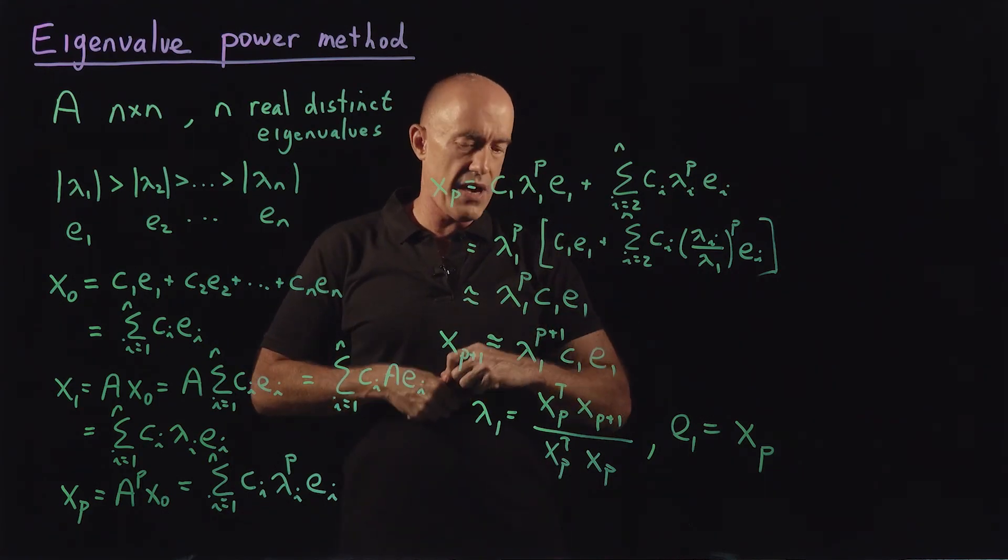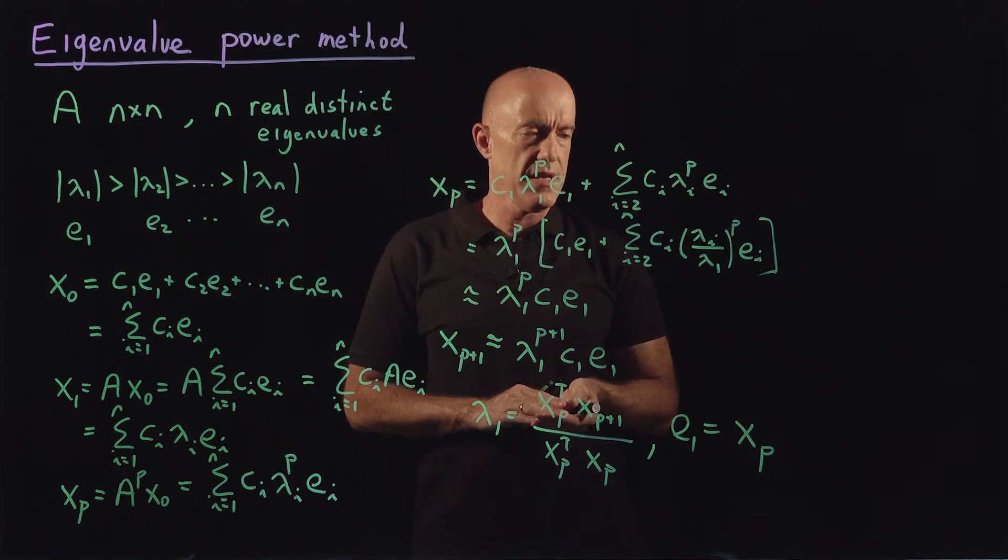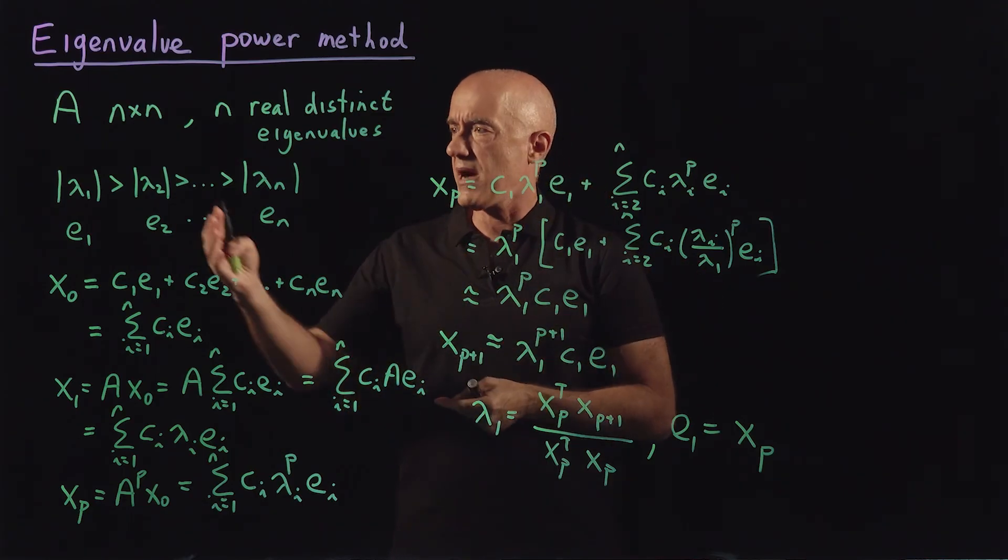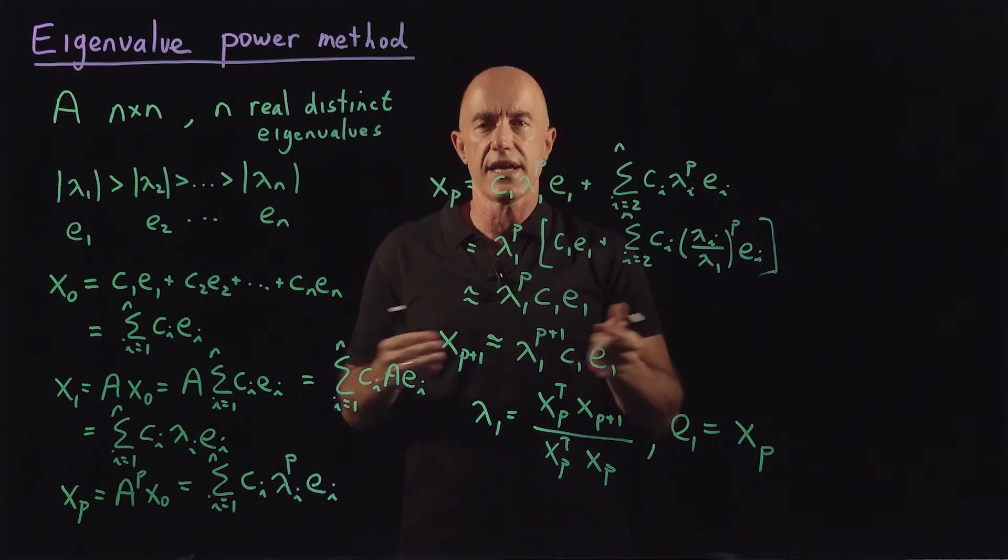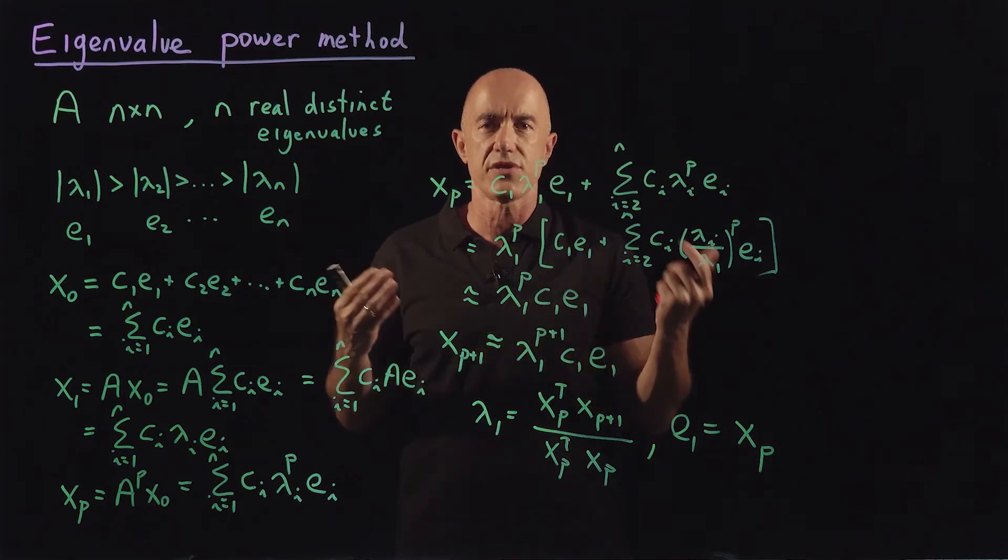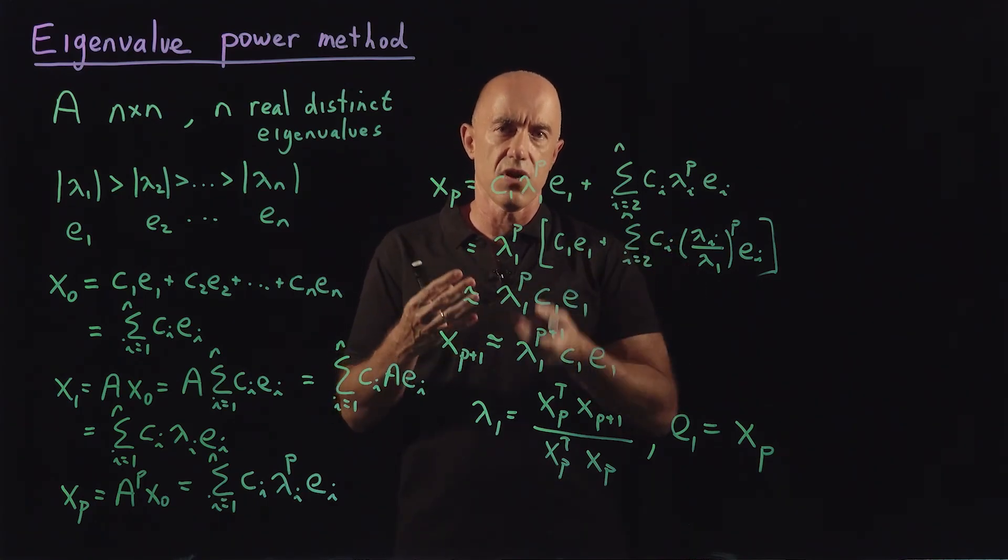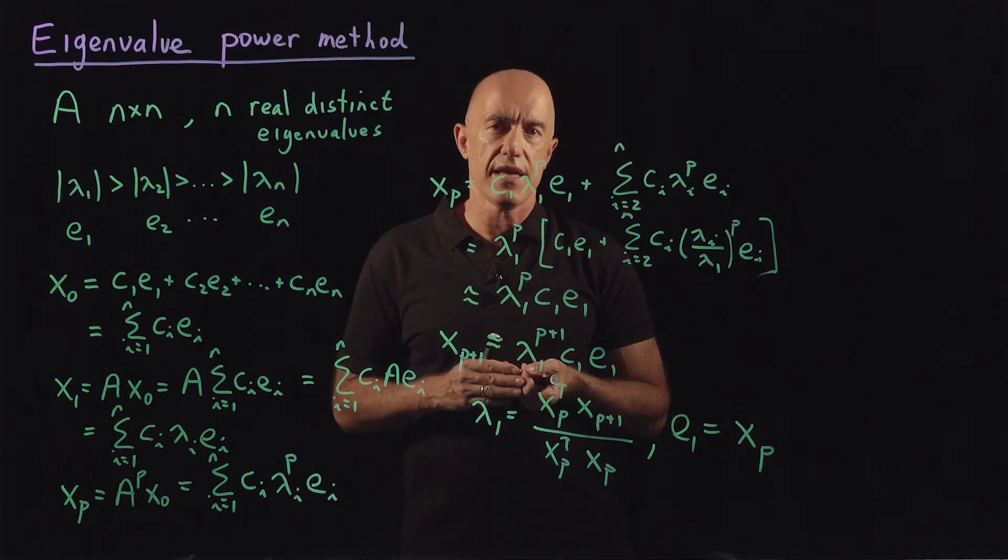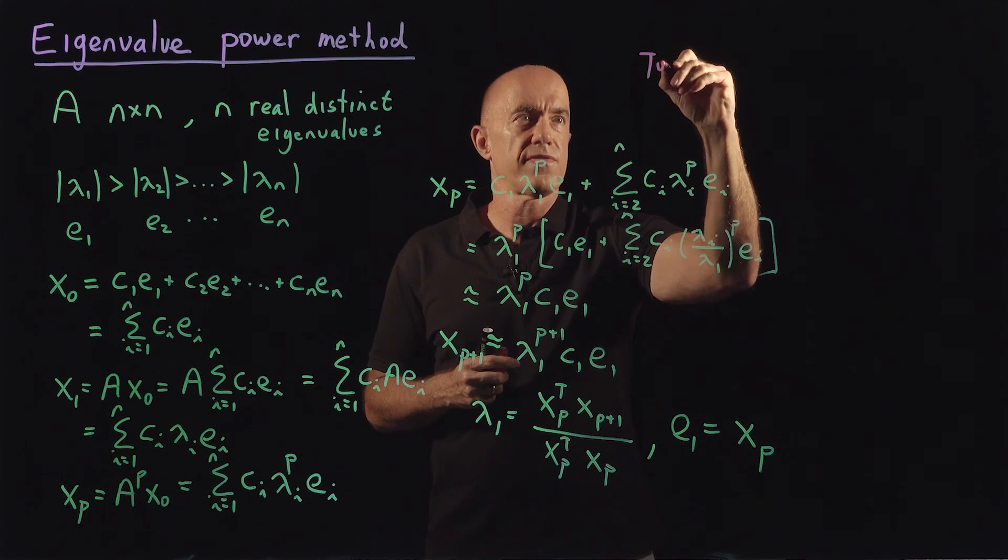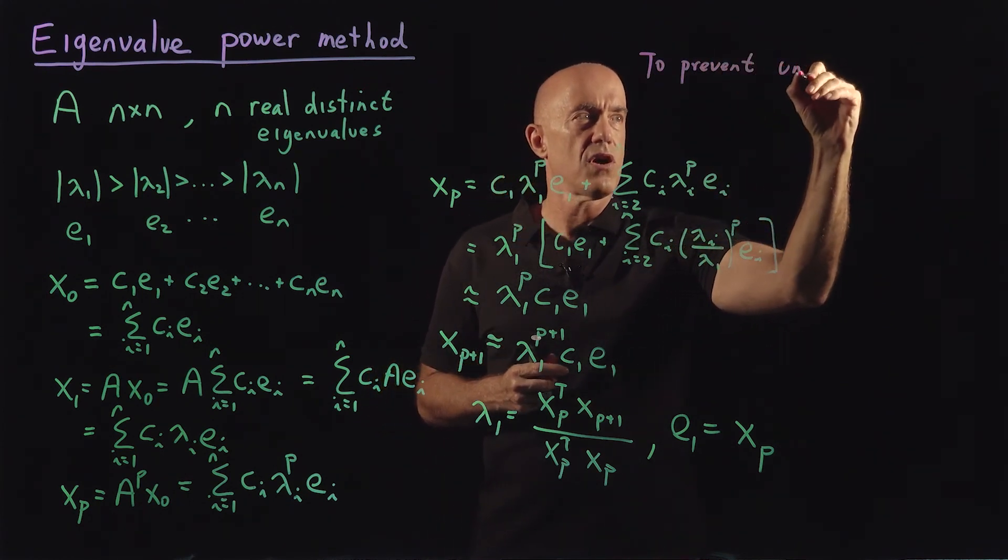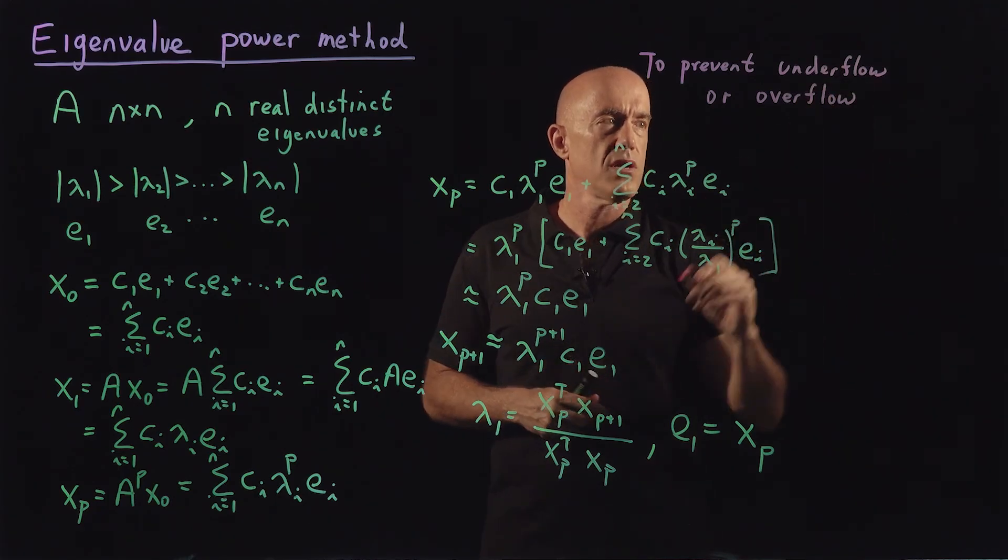There's one more kind of trick you use numerically. The problem of the direct implementation of this method is that you keep multiplying by lambda one. If lambda one is larger than one, you can get larger and larger values for x p. And you can end up with overflow. You can get larger than the largest value that you can represent on the computer. Or if lambda one is between zero and one, you can get underflow. You can drive down to something smaller than you can represent on the computer. So there's an easy way to fix that. To prevent underflow or overflow, making the numbers too small or too large.